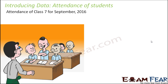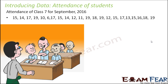Let's say that the attendance of class 7th for the month of September is somewhat like this: 15, 14, 17, 19, 10, 10, 6, 17, 15. This represents the number of students present on each day of September. In the month of September, you have a total of 30 days. Let's assume you have 20 to 25 working days, and the attendance of those working days is given as you can see on the screen.